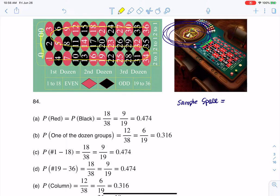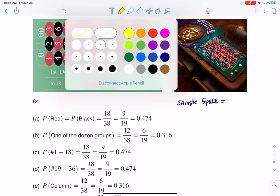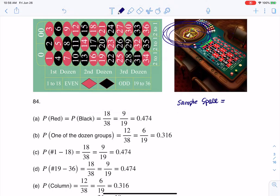But there's also the green zero and the green double zero. So when I talk about the sample space here, anytime you're playing roulette, there are 38 possible outcomes. And why it's good to count that is because that'll become our denominator in most of these problems.